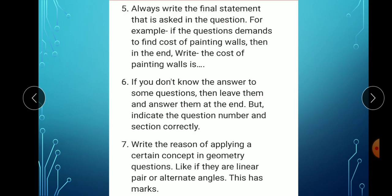Always write the final statement that is asked in the question. For example, if the question demands to find the cost of painting of walls, then at the end we should write 'the cost of painting walls is' - whatever answer you got, just specify. If you don't know the answer to some questions, then leave them and answer them at the end. But indicate question number and section correctly. This is very important. If in a hurry, if you are writing the question is from section B and you are writing section C and directly solving that question, then you may lose marks even though your sum is correct.